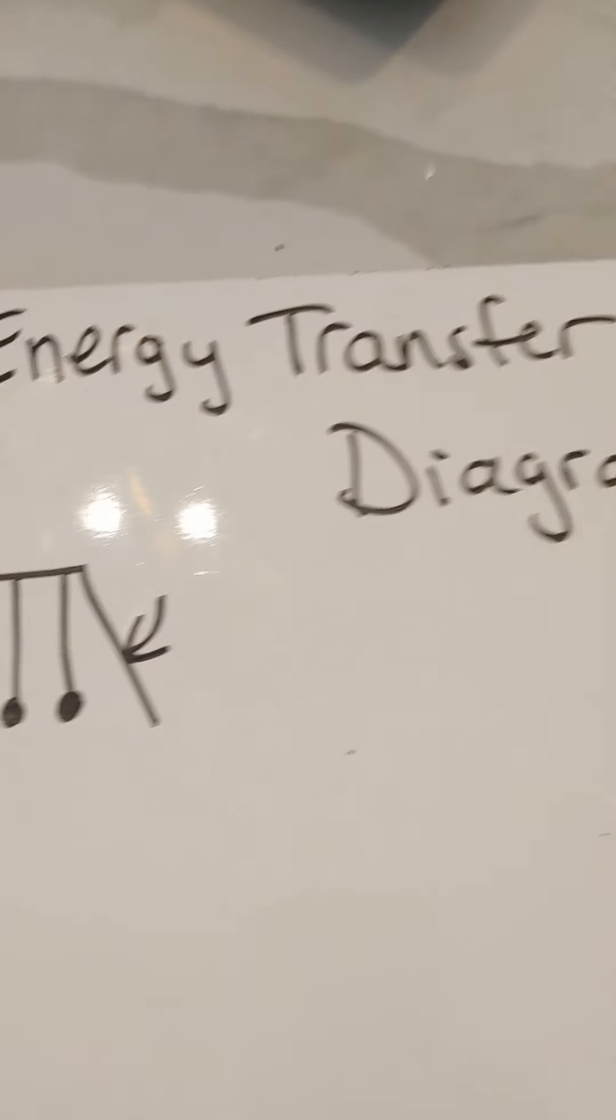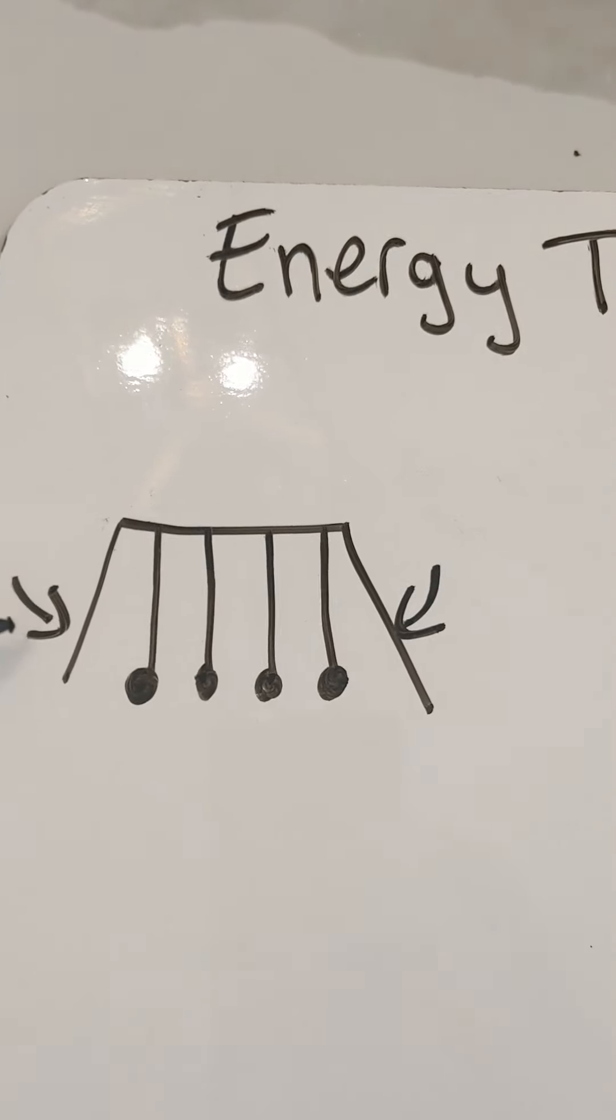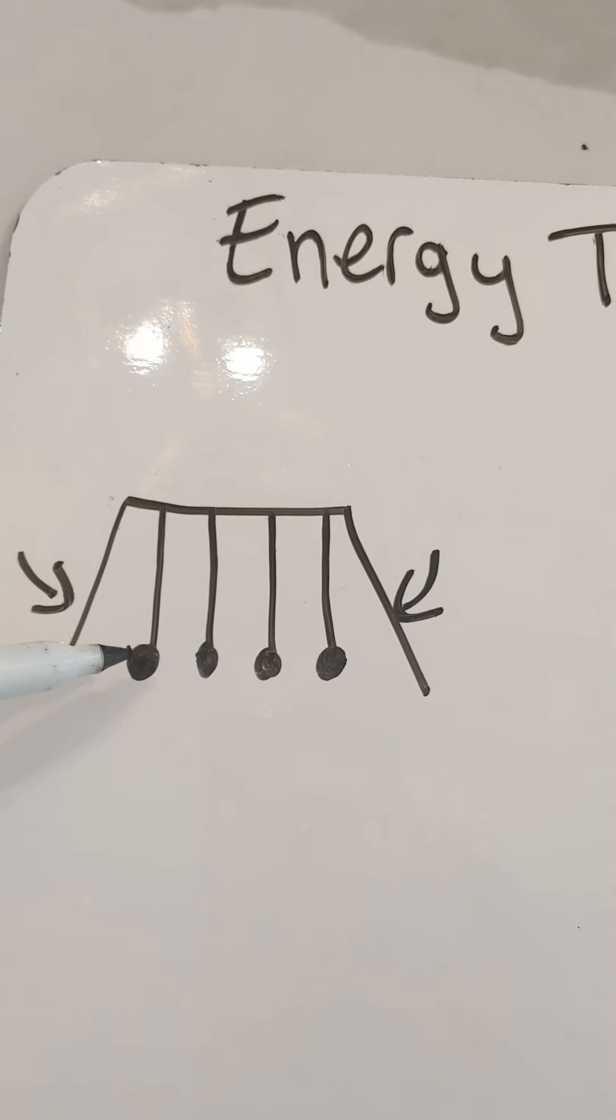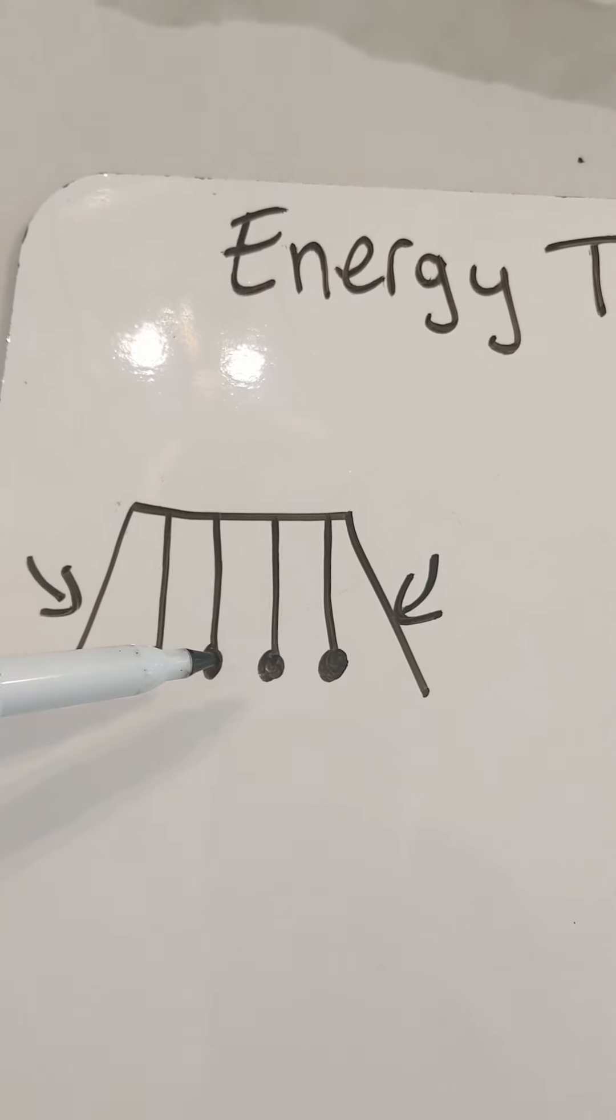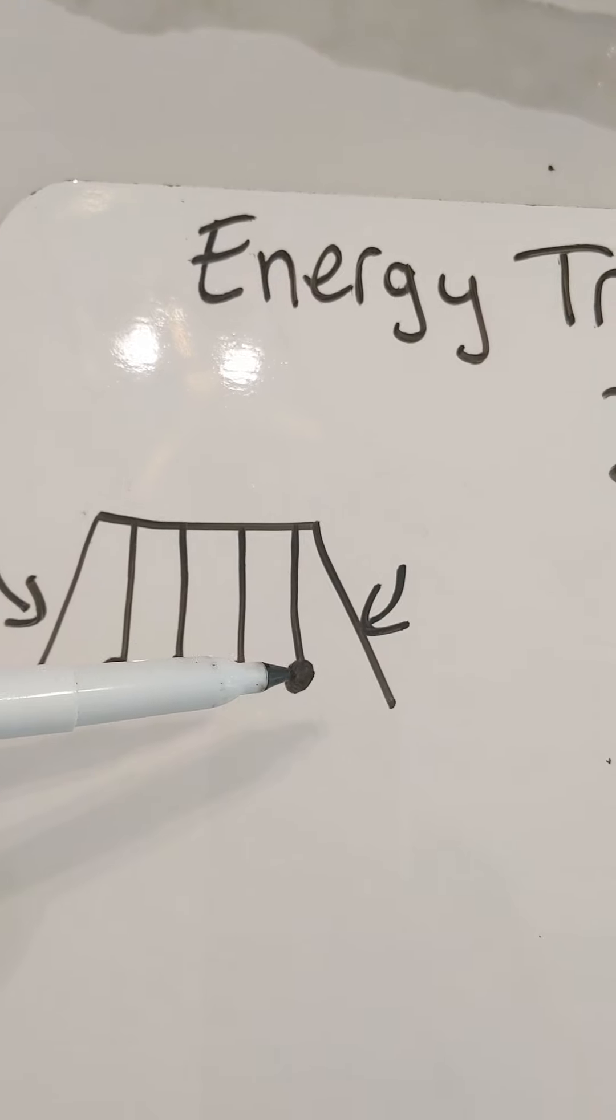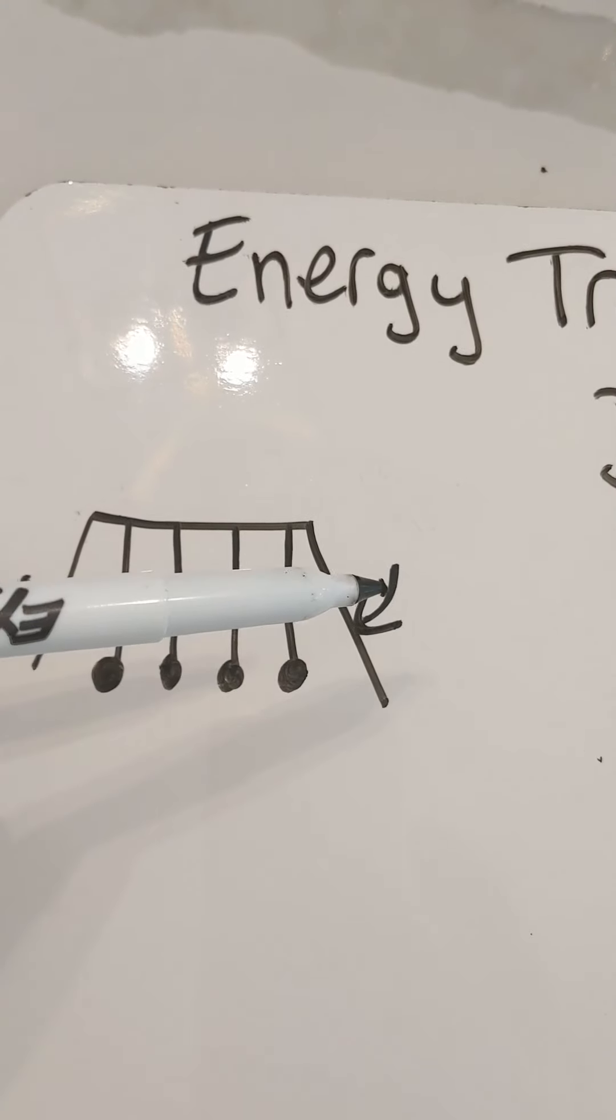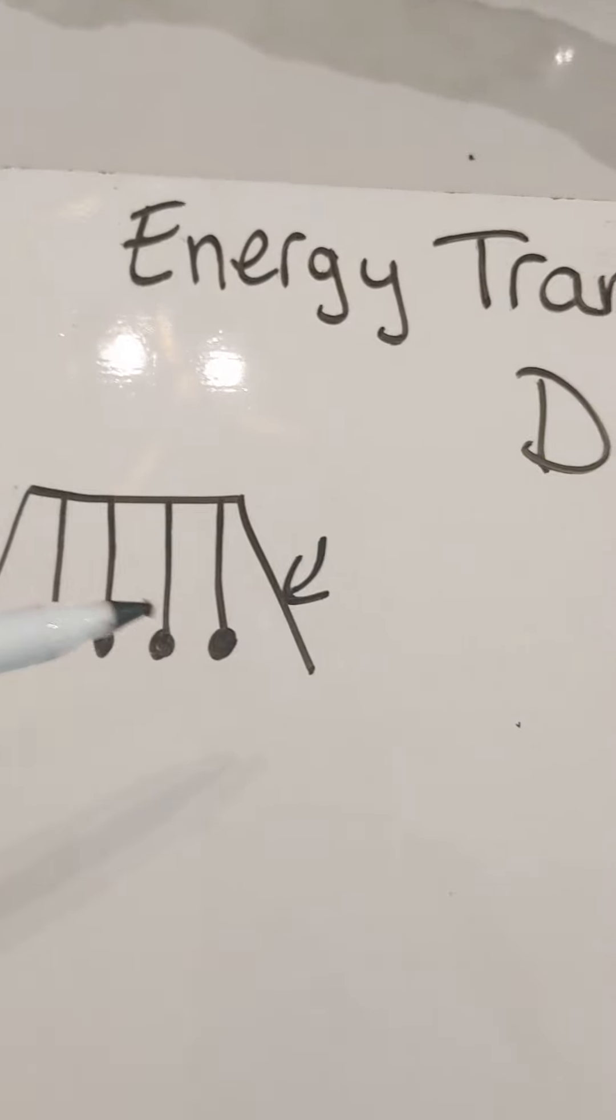Just like that Newton's cradle, we had energy being transferred from this part of the pendulum to here, to here, and all the way to the other side that made the other ball go out. And then it goes back and forth in that manner.